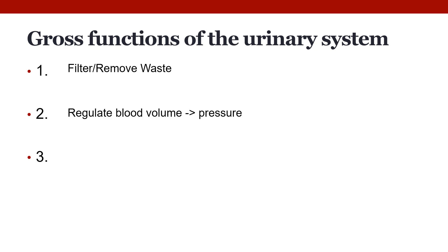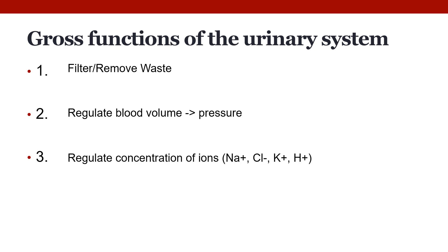The urinary system also regulates blood volume and blood pressure. The regulation of blood volume is done by increasing or decreasing the amount of water released from the blood. So if blood volume is too low, if we're dehydrated, water can be reabsorbed and blood volume will increase. Blood volume and pressure are intimately related, so if blood pressure is too high or too low, the urinary system can help correct this by altering blood volume. If blood pressure is too high, more water can be removed to decrease volume and pressure.